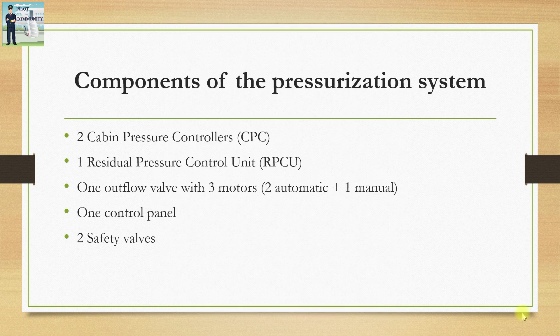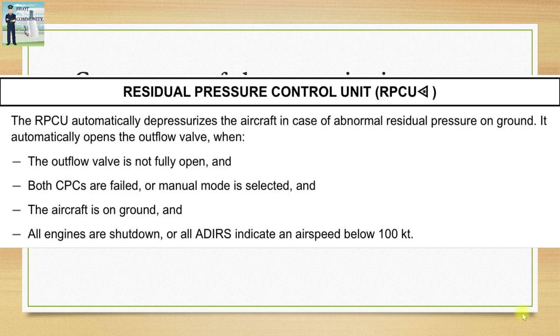We have one residual pressure control unit (RPCU), which was not there in earlier days but was added after an incident where a cabin door was violently opened. The RPCU automatically depressurizes the aircraft in case of abnormal residual pressure on the ground. The logic it follows: when the outflow valve is not fully open and both CPCs have failed, or when in manual mode and the aircraft is on ground with all engines shut down, or all ADIRSs indicate an airspeed below 100 knots — all these conditions must be satisfied for the outflow valve to fully open.